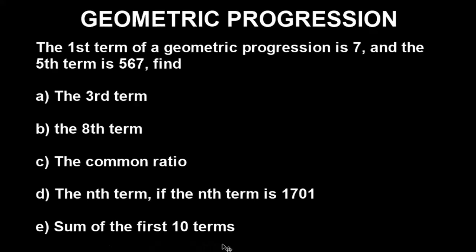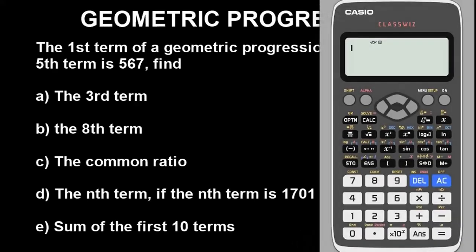Let's bring the calculator now and go straight into solving each one of them. This is the Casio ClassWiz calculator. The very first thing you have to do is clear the calculator — this is very important. If you have watched some of my videos before you will know I always say this, to put the calculator in default mode.